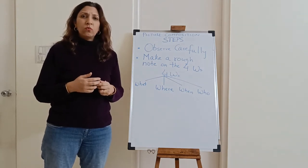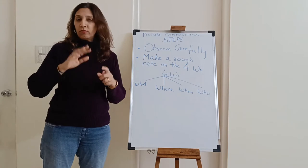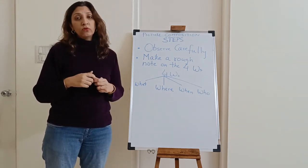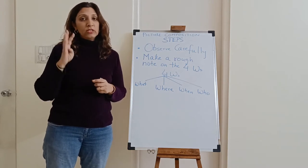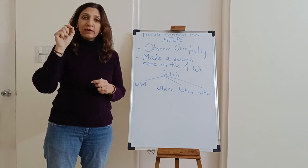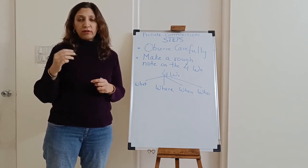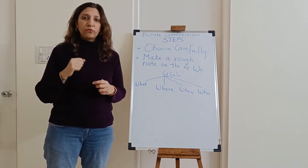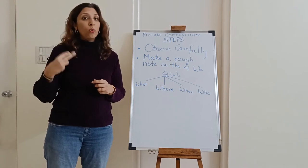The third W is 'when': when does the scene take place? Which season is it? You can figure that out from the clothes the people are wearing or from the background. The fourth and most important W is 'who': who all are there in the picture? Make a rough note of the what, the when, the where, and the who in your rough section or on the side of the question paper.